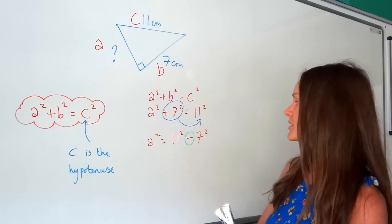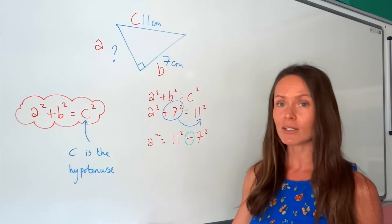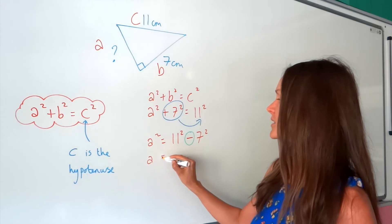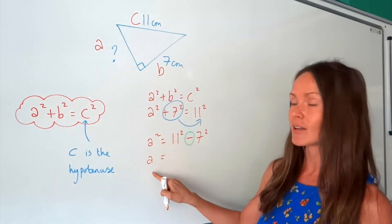So, not forgetting the minus. So just like before, to get rid of the square, the opposite is square rooting. So I'm going to square root both sides. When I square root A squared, it just gives me A, and then I'm going to square root this one.